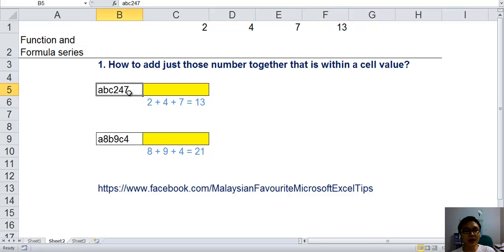For example, one cell B5 contains ABC247. So how can you add just 2, 4, 7 into this cell to show that result, which is 13? If you want to do it manually, of course you can, just put that equal to 2 plus 4 plus 7. That's what you do manually.